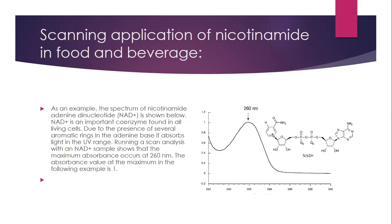As a scanning application example in food and beverage, the spectrum of nicotinamide adenine dinucleotide (NAD) is shown. NAD is an important coenzyme found in all living cells. Due to the presence of several aromatic rings in the adenine base, it absorbs light in the UV range. Running a scan analysis with a NAD sample shows that the maximum absorbance occurs at 216 nanometers, with an absorbance value at maximum of 1.